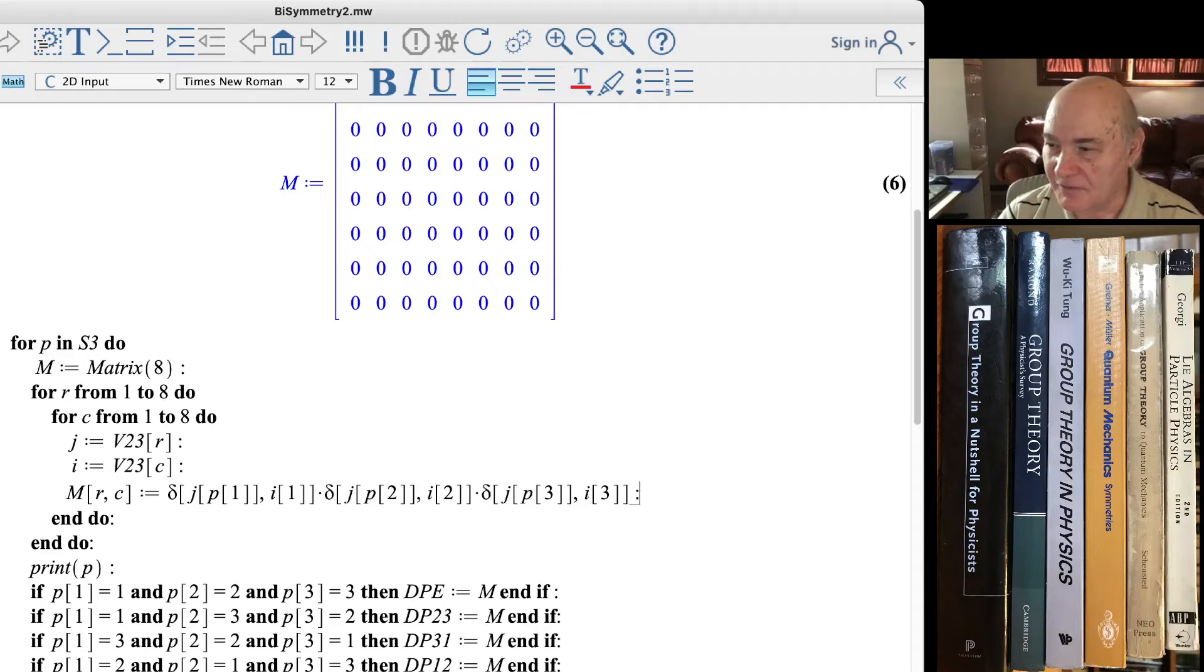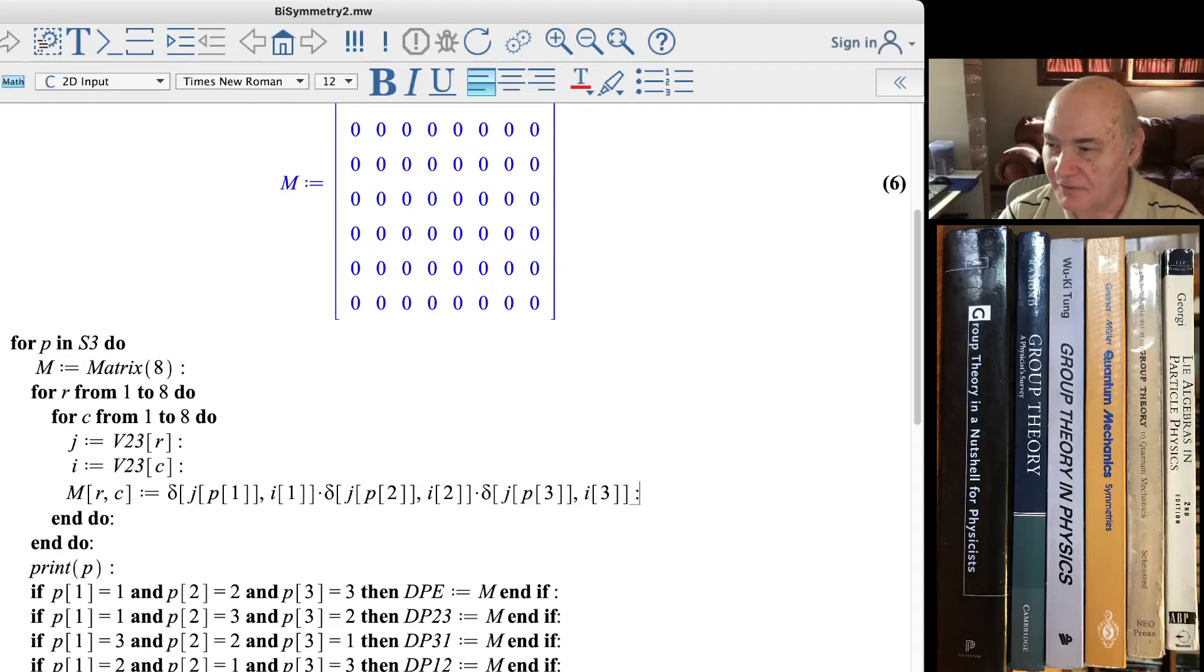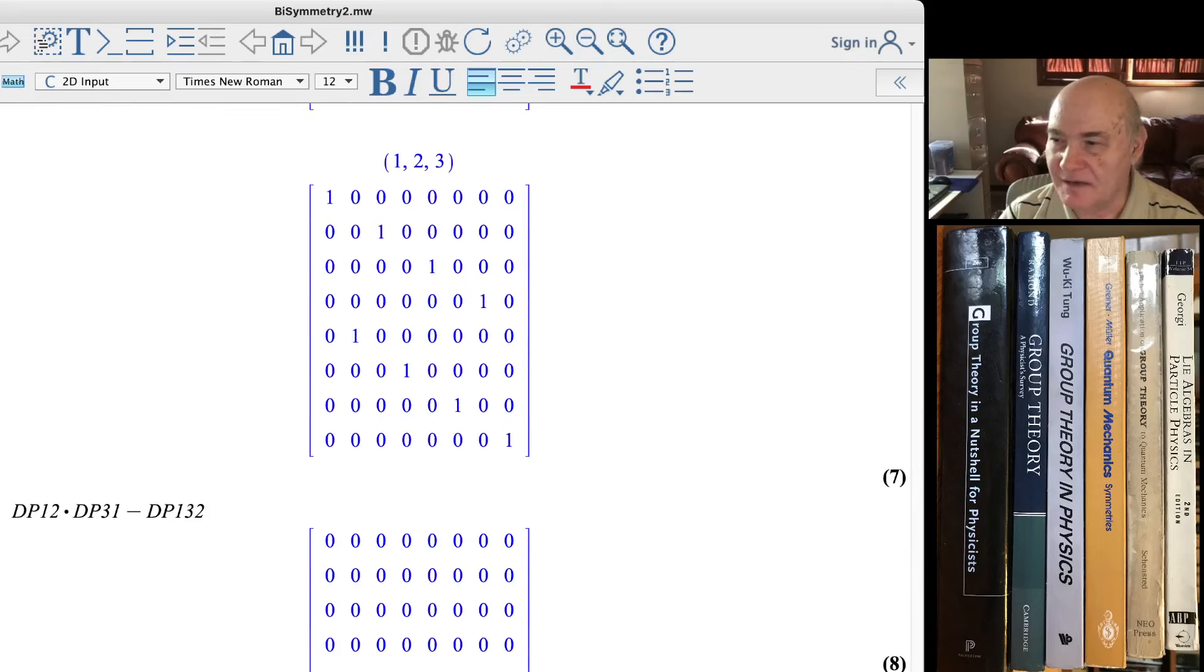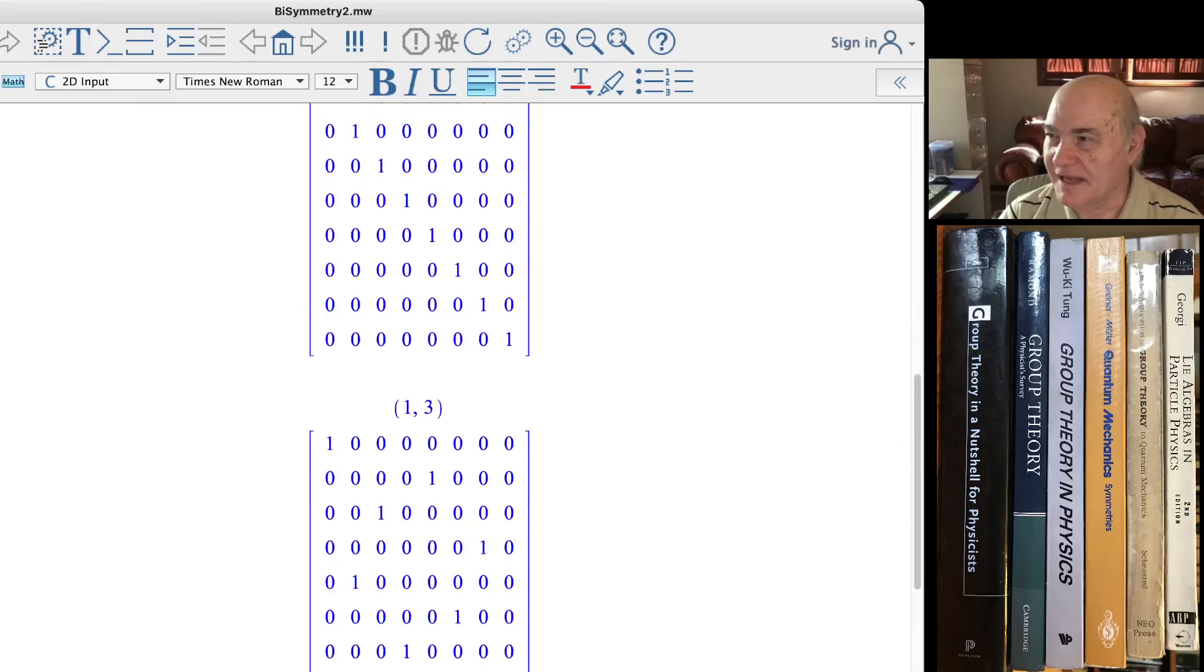So anyway, I computed all these representation matrices using exactly the formula, this thing on MR comma C, this line over here. I used exactly this formula, same one in the book that I just showed you, and I was expecting when I did the representations to see if they worked out, I was expecting it wouldn't work out, but it did work out. They were all zeros, as they should be, and these were inverses, as it should be.